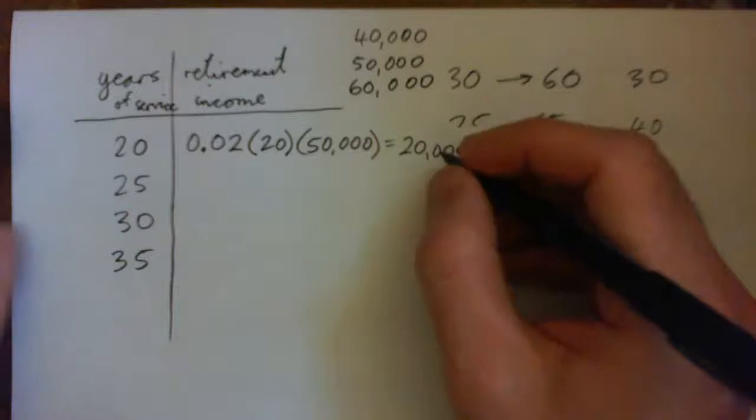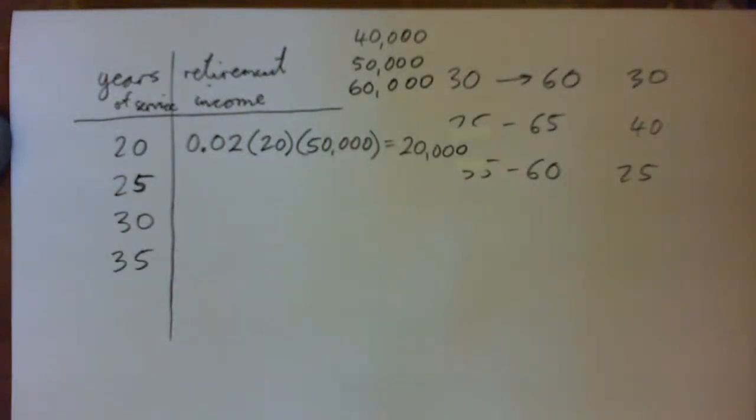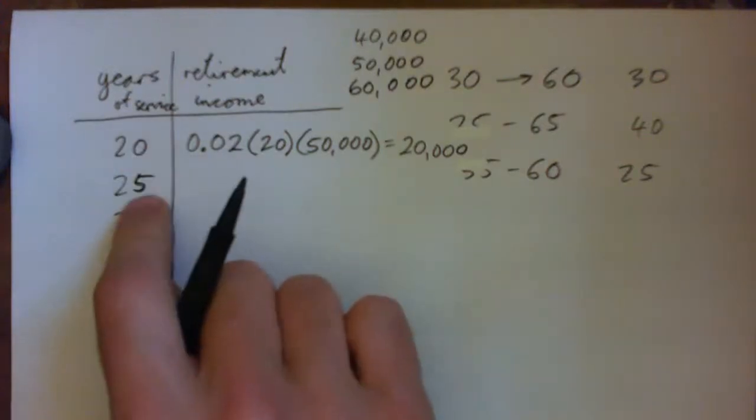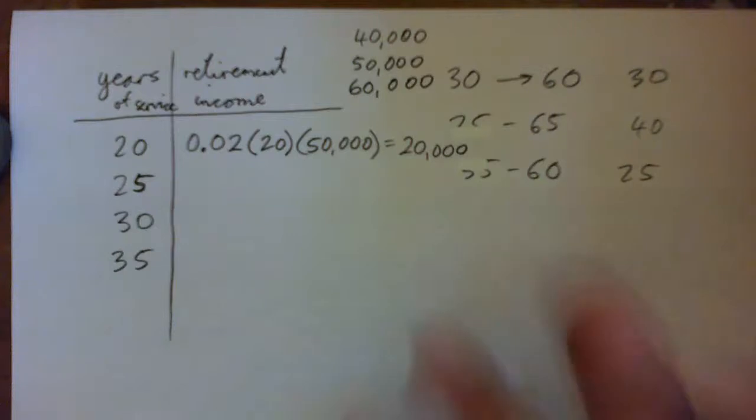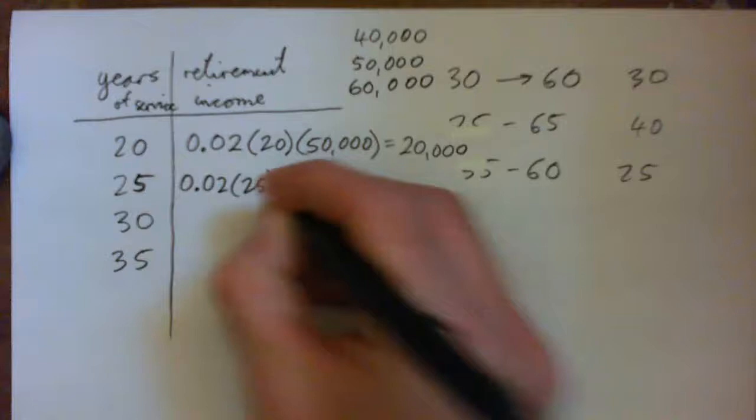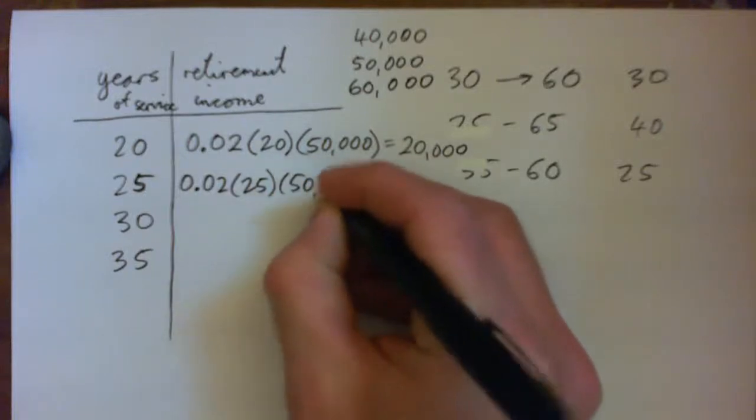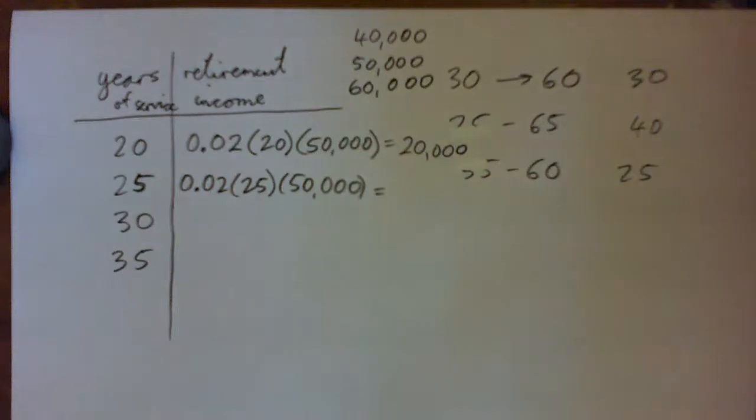So about 20,000. But then the question is, is the retirement income a linear function of the number of years of service? In other words, if you do five more years of service, will the increase be the same? So let's do this: 0.02 times 25 times 50,000. I don't know why I'm not using my calculator, I should do that.